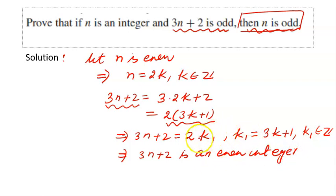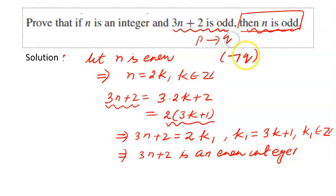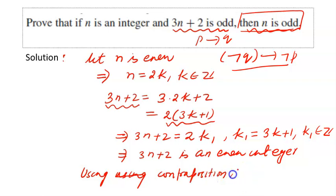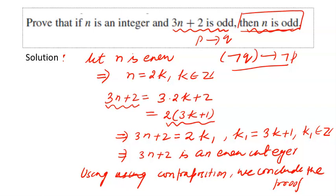In this case, we started with the negation of the original conclusion — that is, negation of Q — and by following a set of arguments, we showed that negation of P is true: specifically, that 3n + 2 is even. We wanted to prove P implies Q, so we proved negation of Q implies negation of P. Using contraposition, we conclude the proof of the statement. This is a very powerful strategy to prove statements.